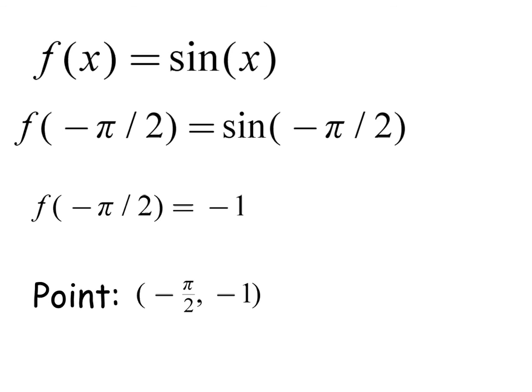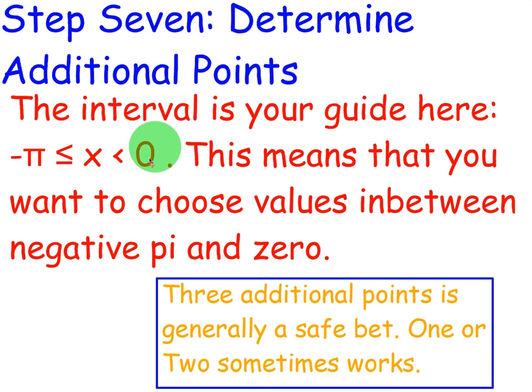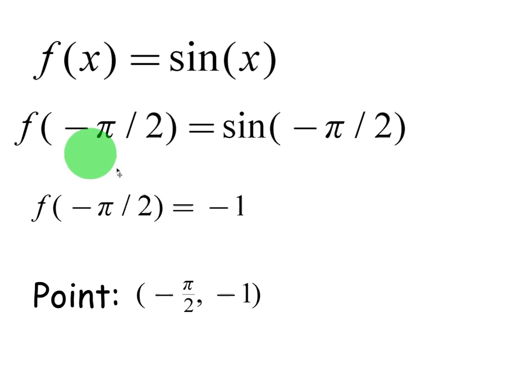The next x value I'm going to plug in is negative pi over 2. That's in between negative pi and 0. In fact, it's smack dab in between them, in the middle. Sine of negative pi over 2 is negative 1. It's in between the third and fourth quadrant, so therefore my next point is negative pi over 2, negative 1.